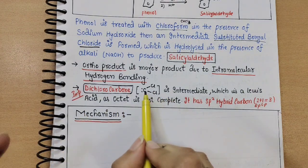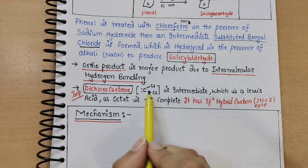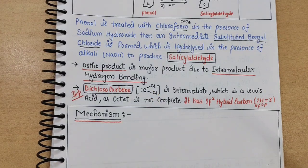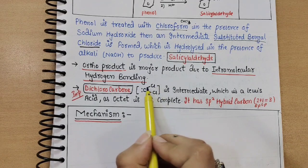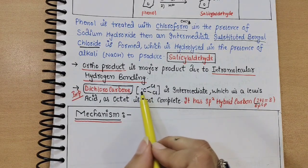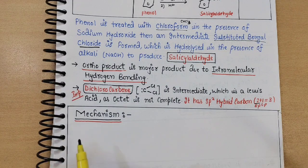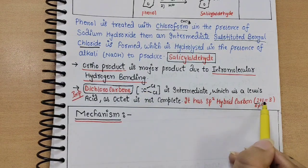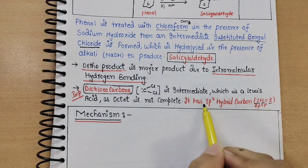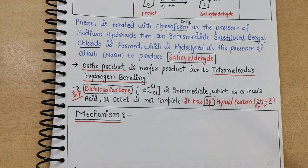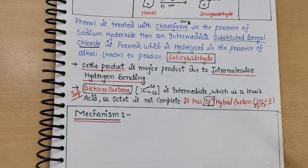What is the hybridization of carbon in carbene? To determine hybridization, count sigma bonds and lone pairs. Carbon in dichloro carbene has two single bonds (with the two chlorines) — that is two bond pairs — and one lone pair. The steric number is 2 + 1 = 3, so the hybridization is sp2.